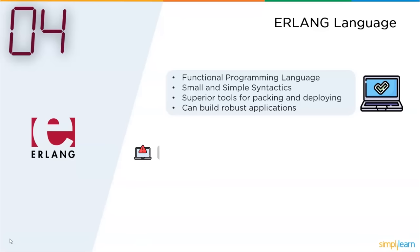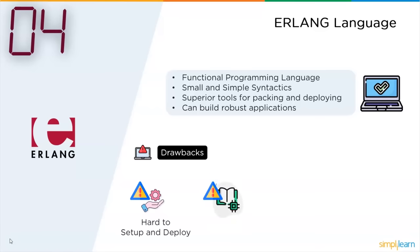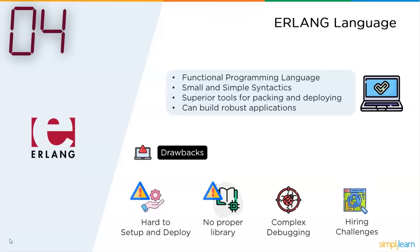The drawbacks that made Erlang an obsolete language: it had a tough time to set up and deploy applications, it had no proper library, it was really complex in debugging, and finally there were hiring challenges — most developers were not exposed to Erlang and companies had a tough time finding developers with good grip on it.